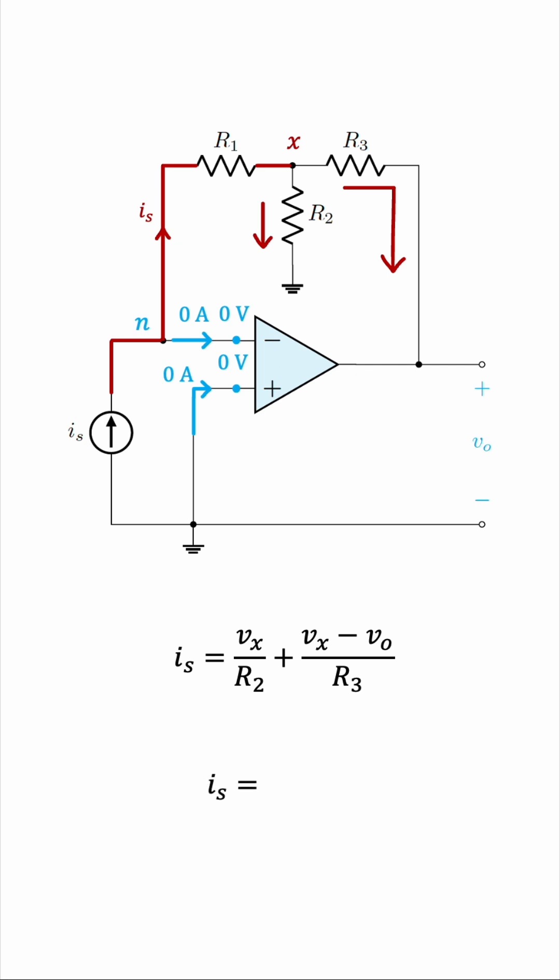IN, the current going through the inverting input, is 0, as we said earlier, so this must be equal to the IS going upward through the R1 resistor. The node voltage equation for this is Vn minus Vx over R1. Can you see it?